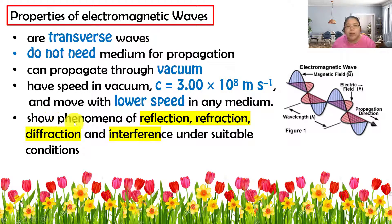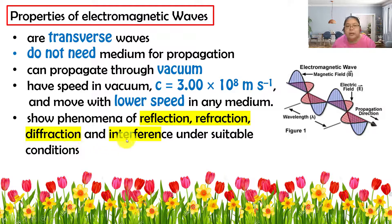That's the same as normal light — when going through a medium, it slows down. Last property: EM waves can show the phenomena we learned before — reflection, refraction, diffraction, and also interference.